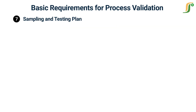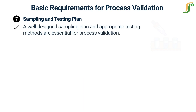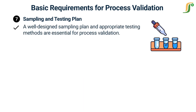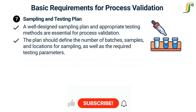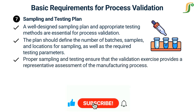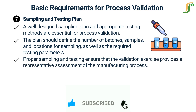Sampling and testing plan: a well-designed sampling plan and appropriate testing methods are essential for process validation. The plan should define the number of batches, samples, and locations for sampling, as well as the required testing parameters. Proper sampling and testing ensure that the validation exercise provides a representative assessment of the manufacturing process.